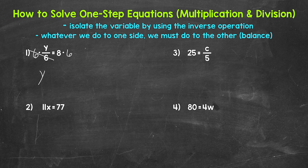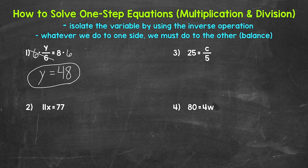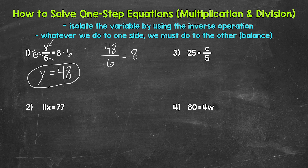y, our variable, is now isolated. So y equals, and then on the right side of the equation, we have 8 times 6, which is 48. So y equals 48 — that's our solution. We can always check to see if we are correct. All we need to do is plug in what we got. So plug in 48 for y. So 48 divided by 6 equals 8. 48 divided by 6 does equal 8, so we are correct. y equals 48.